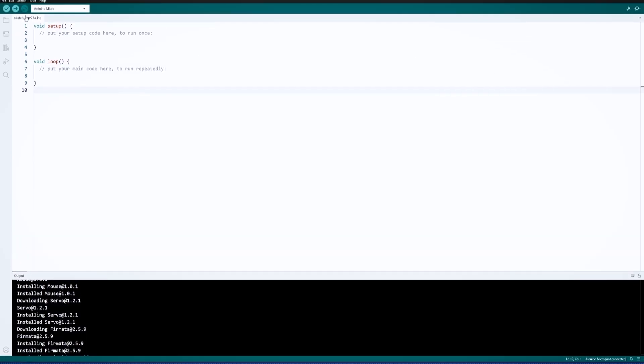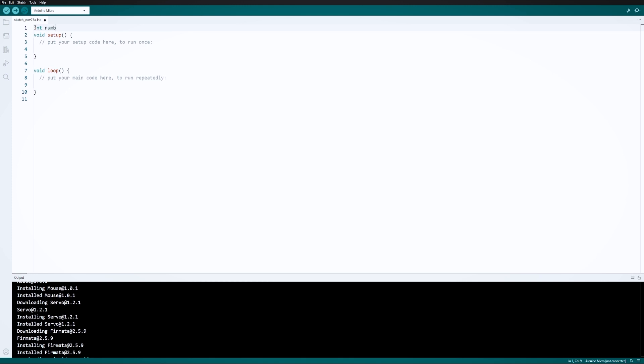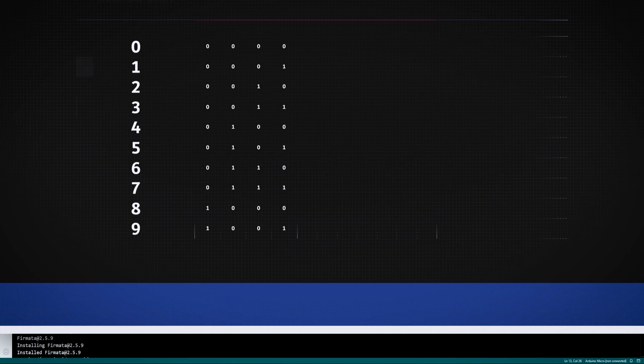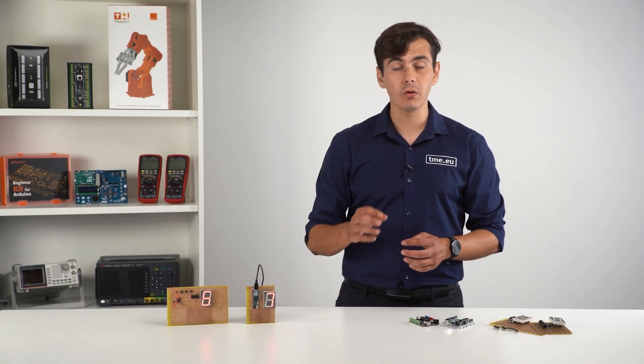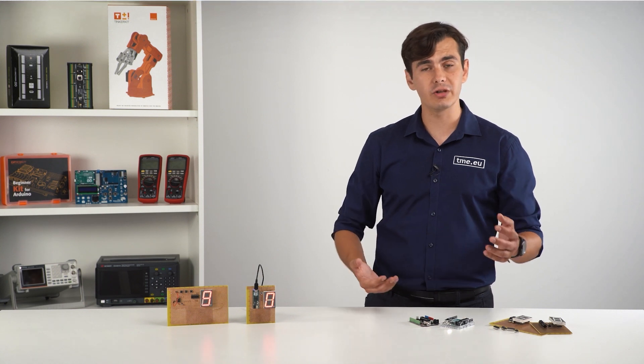When everything is soldered in place, it is time for some coding. We will begin by creating a two-dimensional array for the individual segment control. The array row size tells us how many numbers we will display and columns represent each segment's information. The array is filled with information that is taken from the common cathode display truth table. To put it simply, the truth table tells us which segment to turn on to display a certain number or a character.